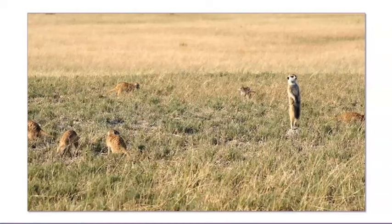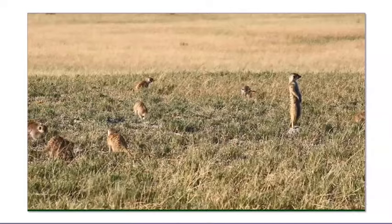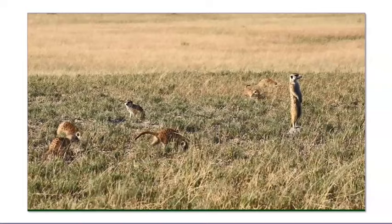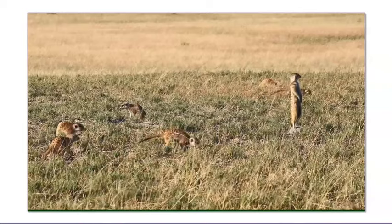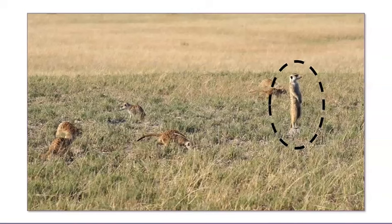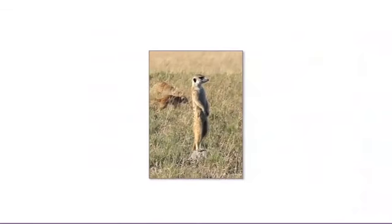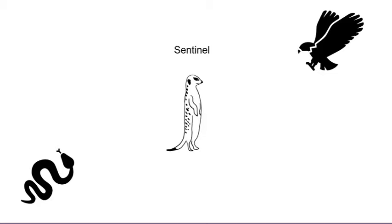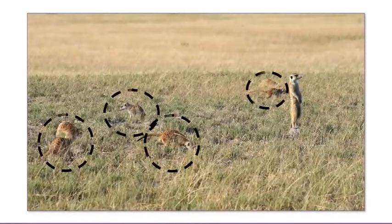Let's watch a video clip of some meerkats in action. What do you notice? Hey, what's this meerkat doing? It's standing up tall and looking around. What do you wonder? I wonder whether this meerkat has a certain job. Maybe this meerkat is acting as a lookout for the other meerkats. As it turns out, this meerkat is acting as a sentinel. A sentinel is like a lookout or a guard. The sentinel watches for predators such as snakes or hawks. What about the other meerkats? Do they also have roles?